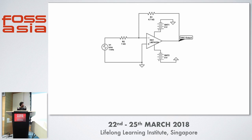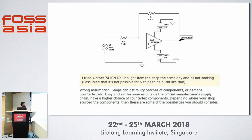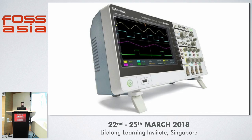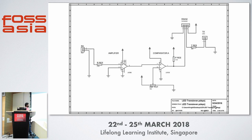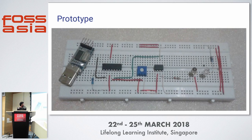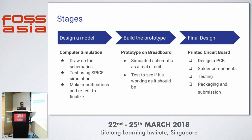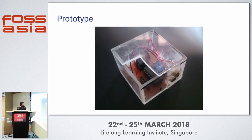I thought the IC was faulty, bought a few more, but they didn't work either. I posted a question on Stack Overflow and learned there could be ground loops. I thought about buying my own oscilloscope, but when I checked the price it was far too expensive, so I dropped that idea. Eventually we came up with a different circuit that fortunately worked the first time I plugged it in. We moved on to prototyping on a breadboard, and when that worked, we moved on to PCB design.